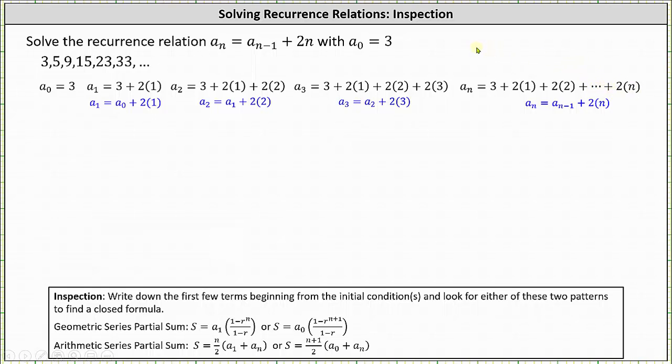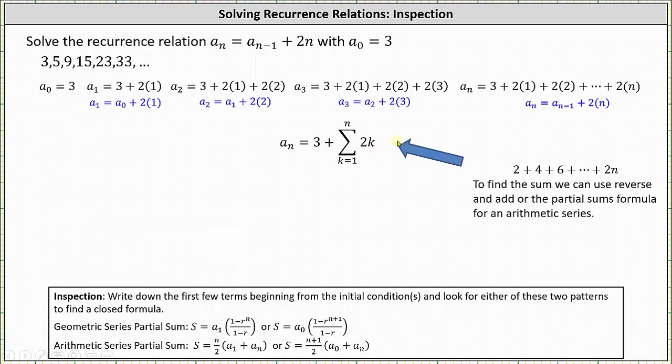This indicates we can write a sub n as 3 plus the sum from k equals 1 to n of 2k. And we should recognize this sum as the sum of an arithmetic sequence and we can determine the closed formula either using the reverse and add method or the partial sums formula for arithmetic sequence below. I'm going to show both methods.